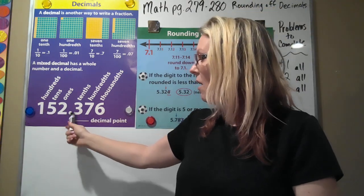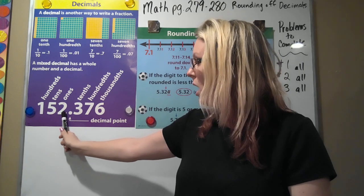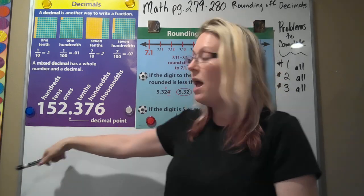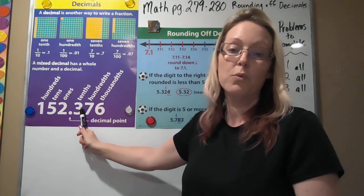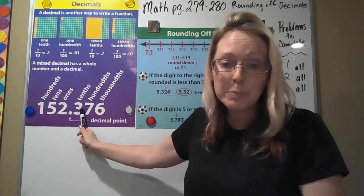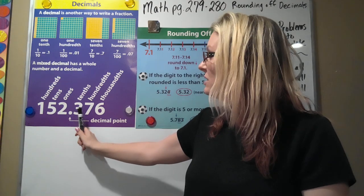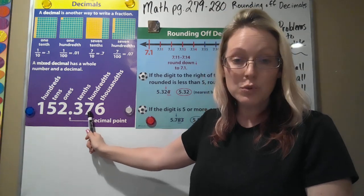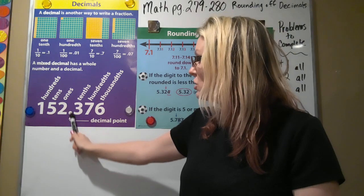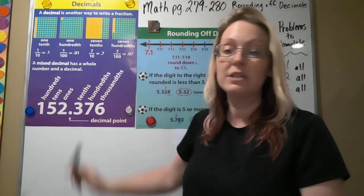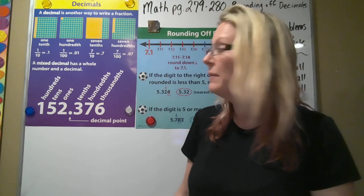Obviously on this side of the decimal, the very first numbers are ones, tens, and hundreds. And then on this side of the decimal, remember, we don't have a ones place. We start with tenths, hundredths, and thousandths. Make sure that you know that very first number is the tenths place.